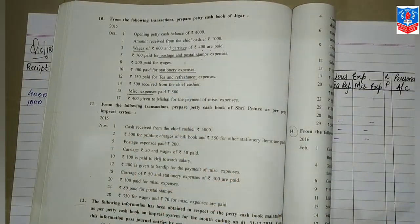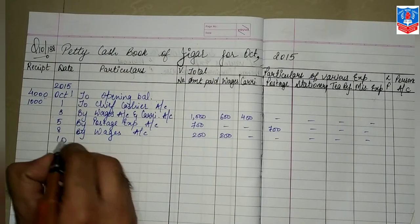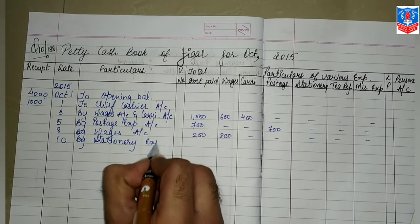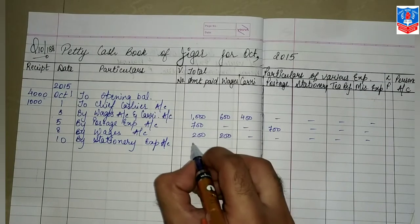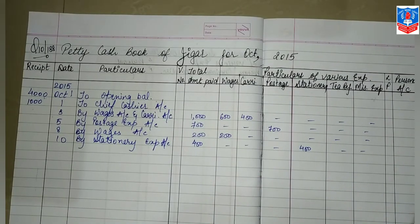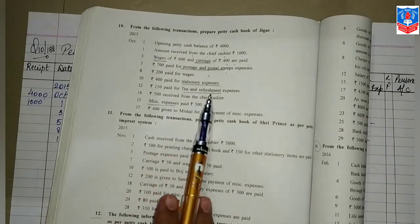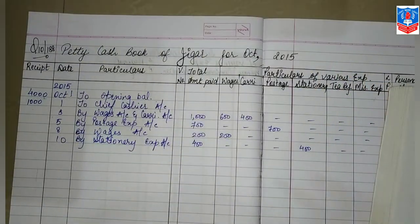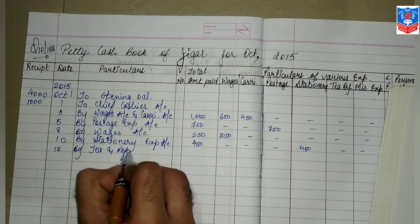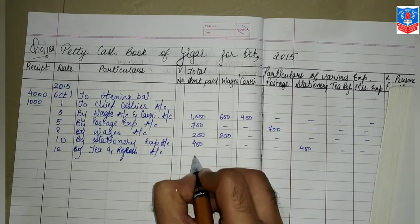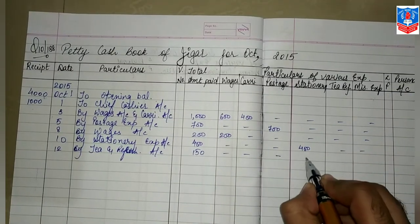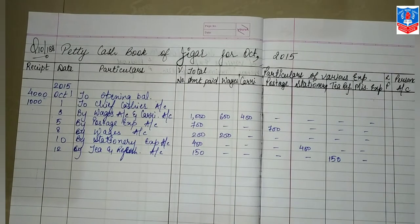400 paid for stationary expenses. Date 10 — you are paying stationary expense. So date 10, 'By Stationary Expense Account.' How much was paid? 400. Total is also 400. Wages — nothing. Carriage — nothing. Postage — nothing. Stationary — 400. Now, date 12: 150 paid for tea and refreshment expense. Date 12, 'By Tea and Refreshment Account.' How much paid? 150. Total is also 150. In the tea and refreshment column — 150. Miscellaneous — dash.